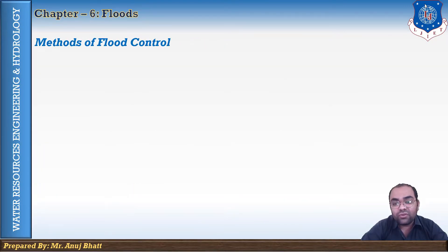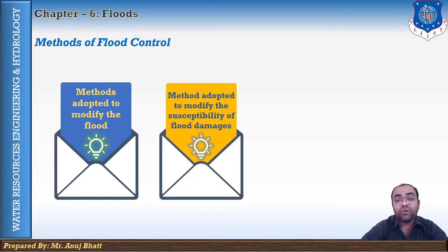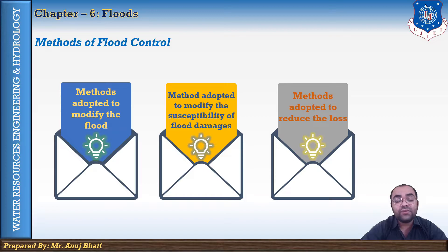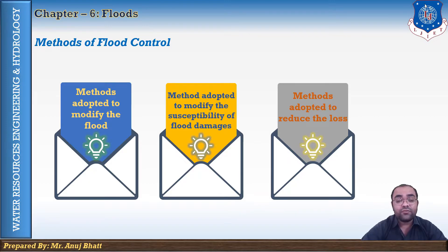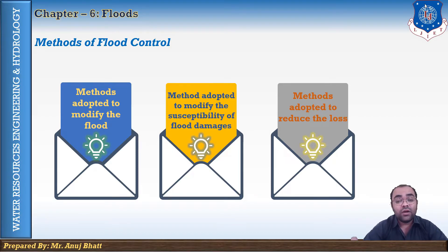Various methods are adopted for flood control, classified into a few categories. The first category is methods adopted to modify the flood itself — these include construction of reservoirs, diversion of flood water, improvement of river channels, construction of emergency floodways, and use of natural retarding basins like providing watershed management to the catchment.